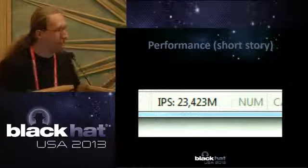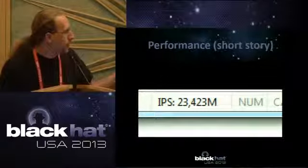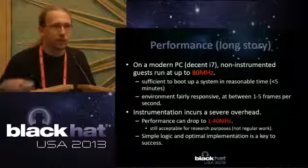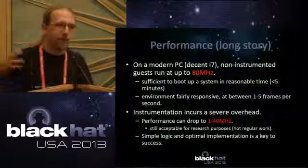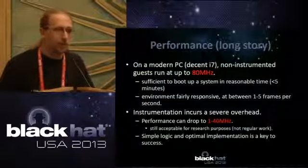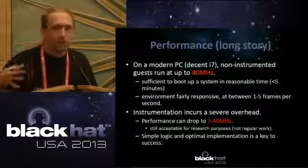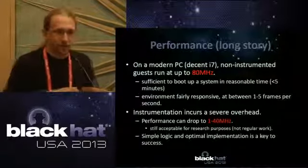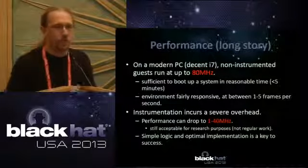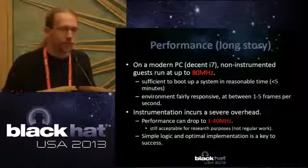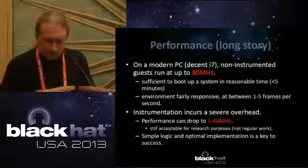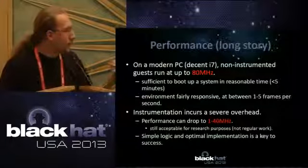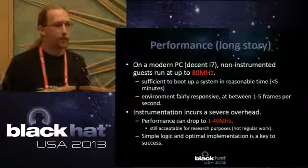About performance — Bochs is painfully slow. Without instrumentation on a modern CPU you get about 80 million instructions per second, basically an 80 MHz machine, so running Windows on it is kind of slow — it boots in about four minutes. If you start adding instrumentation logic it gets slower; you might decrease to around 1 MHz. Most of our instrumentation runs at about 20 MHz, meaning Windows boots in about 20 minutes. Linux is not much faster. FreeBSD thankfully was faster. It's okay for research, especially with automated tests, but you cannot do normal work on it.